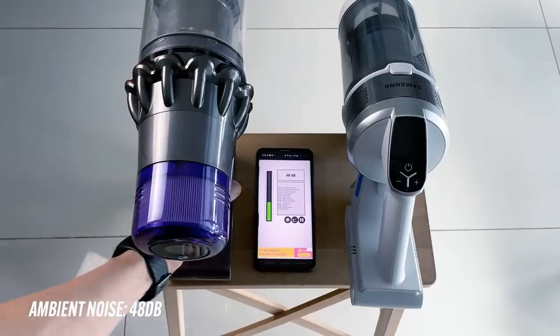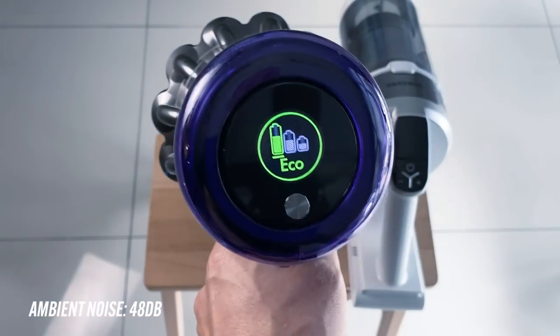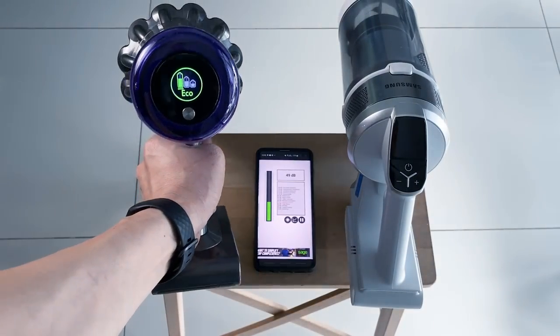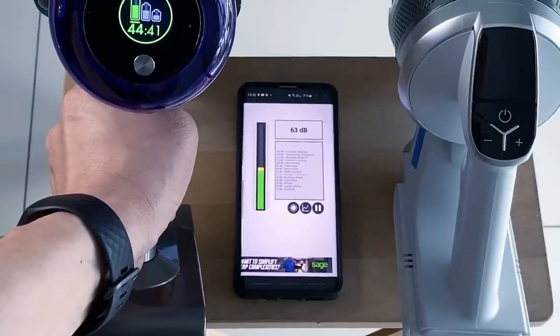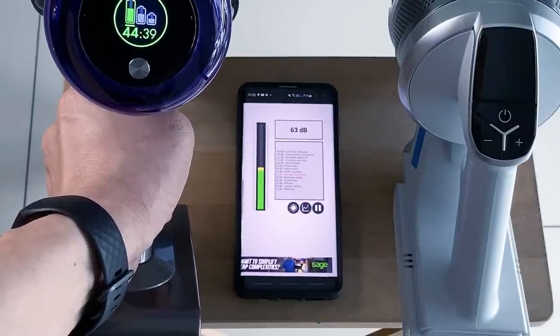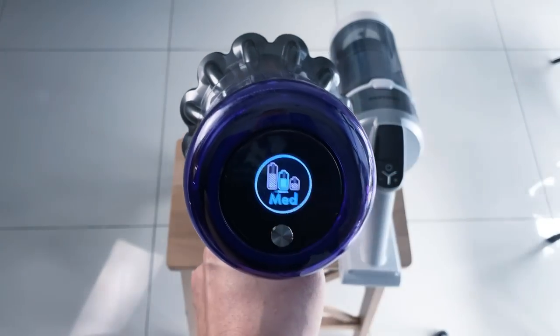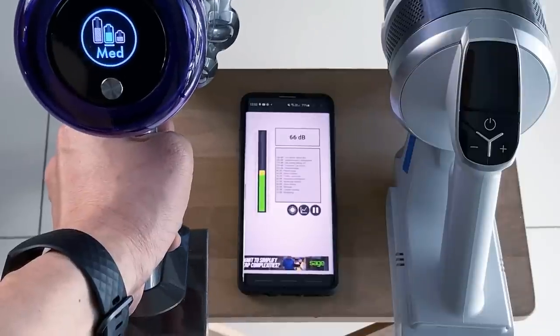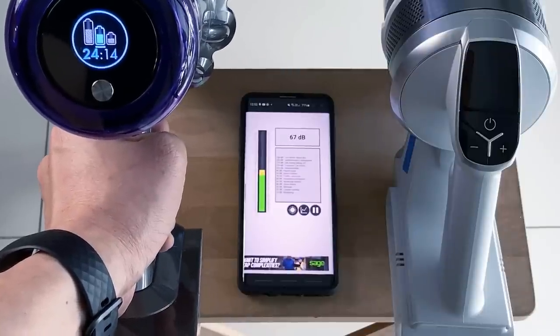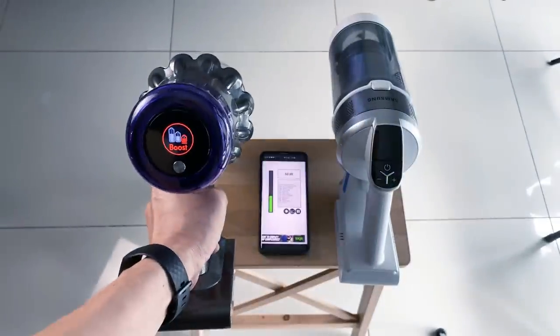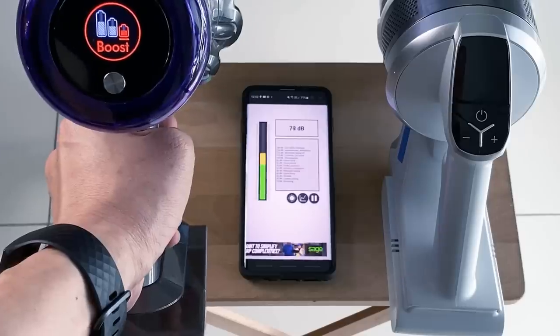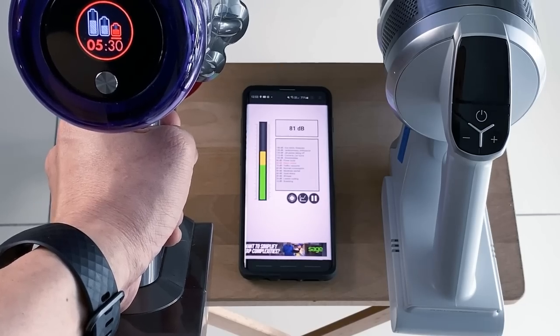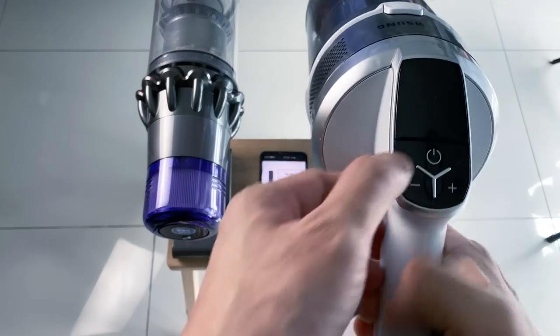Next, let's touch on noise levels. So how quiet is the Jet 70 and the Dyson V11? Shhh, let's begin. Do note that the Dyson V11 has a higher air suction power of 185 air watts. Next, the Samsung Jet 70.